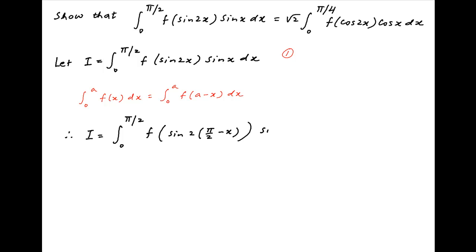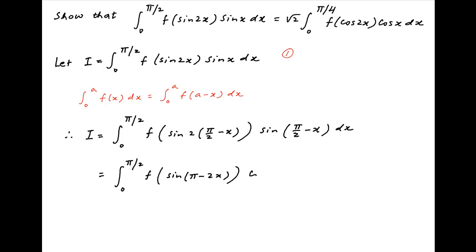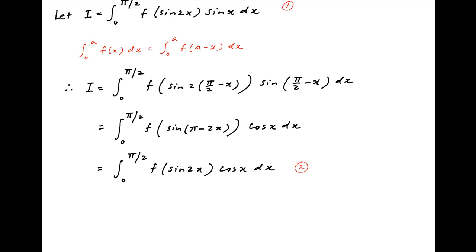Therefore, the integrand becomes f of sine of (2 times π/2 minus x) times sine of (π/2 minus x) dx. This equals integral 0 to π/2 of f of sine(π minus 2x) times cos x. Since sine of π minus 2x equals sine 2x, the value of I equals integral 0 to π/2 of f of sine 2x times cos x dx. Let us call this result 2.